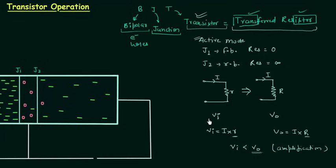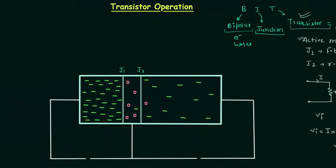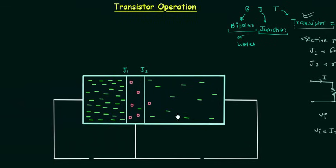All these things will be clear when I explain the working of an NPN transistor in active mode. This is an NPN transistor: the emitter region is N, the base region is P, and the collector region is N. This terminal is the emitter terminal, this terminal is the base terminal, and this terminal is the collector terminal.